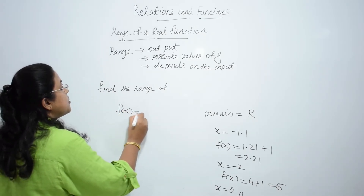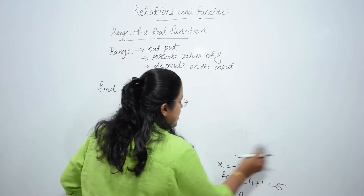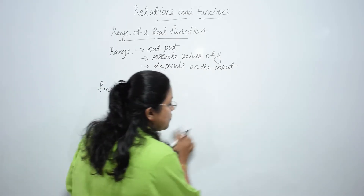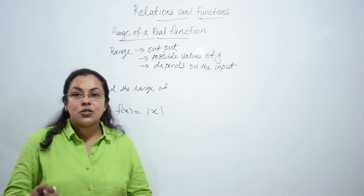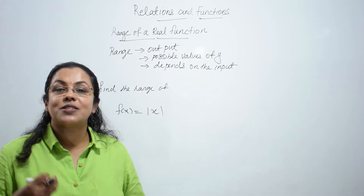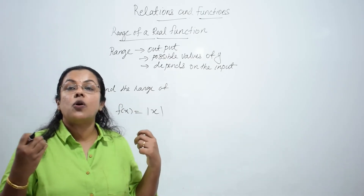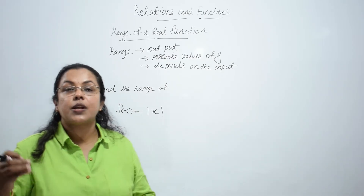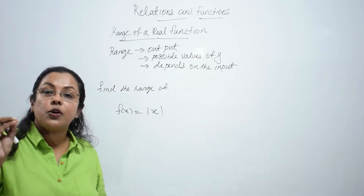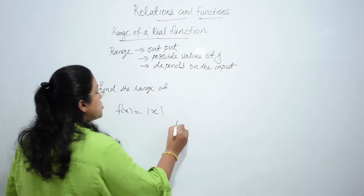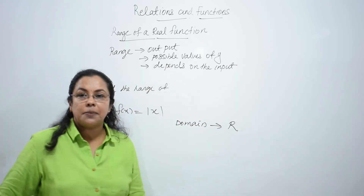Now consider f(x) = |x|. What about its domain and range? Here also, f(x) is defined for all values of x. f(x) cannot be equal to infinity for any value of x, so f(x) is defined for all values of x. Its domain is nothing but the set of real numbers.